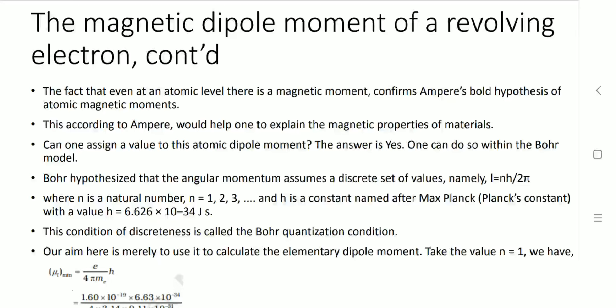Quantization means that values are taken only at certain discrete levels. To calculate the minimum dipole moment, we take n equals 1 — the minimum value. So mu-L minimum equals e upon 4 pi m_e times h. Replacing the values: e is 1.6 times 10 to the minus 19, h is 6.63 times 10 to the minus 34, divided by 4 times pi (3.14) times mass of the electron 9.11 times 10 to the minus 31. The value comes out to 9.27 times 10 to the minus 24 Ampere times meter squared. This value is called the Bohr magneton.